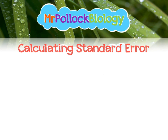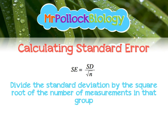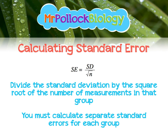The standard error formula is given in your statistics booklet: standard error equals the standard deviation divided by root n. To put it in words, divide the standard deviation by the square root of the number of measurements in that group. So going back to the height example, you would do the standard deviation of the males divided by the square root of how many males you took data from. You must calculate separate standard errors for each group.